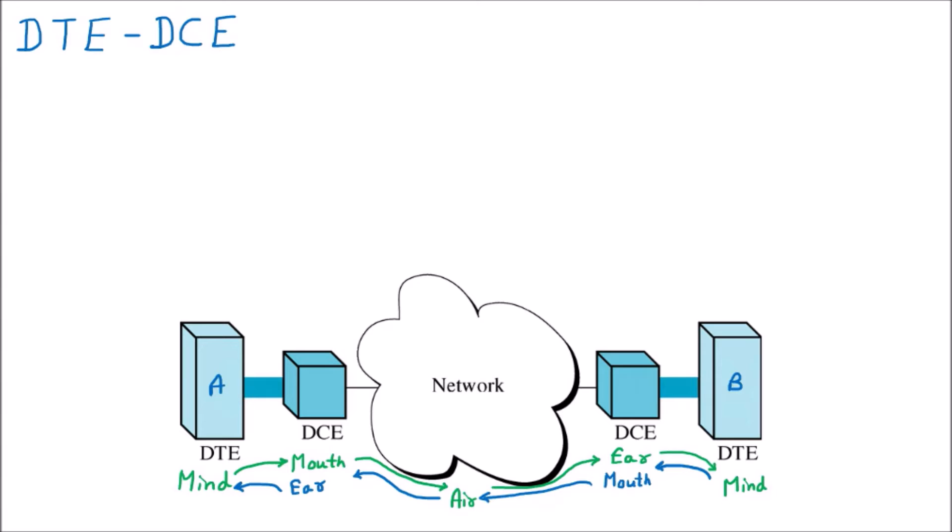So that is the example I have taken. DTE is the person who has the power to understand. DCE is the device that is going to communicate — just like the mouth and ear. Mouth and ear cannot process the data; they can only communicate. So that is all about the DTE and DCE analogy.